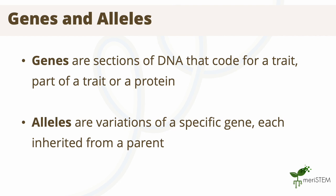You may inherit two different alleles or the same allele for a particular gene from your parents. These two inherited alleles, alongside other gene interactions, determine the trait expressed. So if you inherit two different alleles from each parent, which one is expressed?